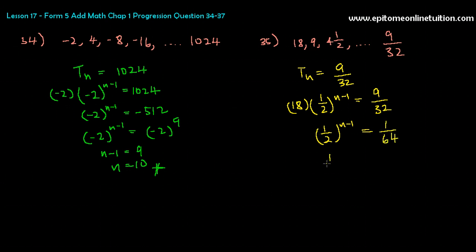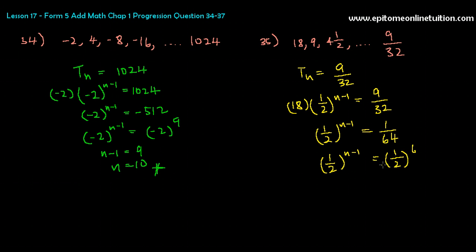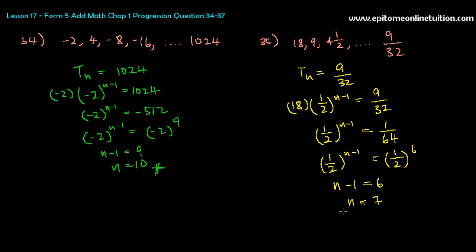It's fairly easy. Sometimes you are not able to make the base the same, then you will have to log 10 both sides — we'll get to that question. So 1 over 2 to the power n minus 1 equals 1 over 64, which is 1 over 2 to the power 6. When the bases are equal — both half — n minus 1 is equal to 6. If you're not clear on 1 over 64, use your calculator: 1 over 2 to the power 6 gives 1 over 64. So n is 7. That means 9 over 32 is the 7th term in this geometric progression.